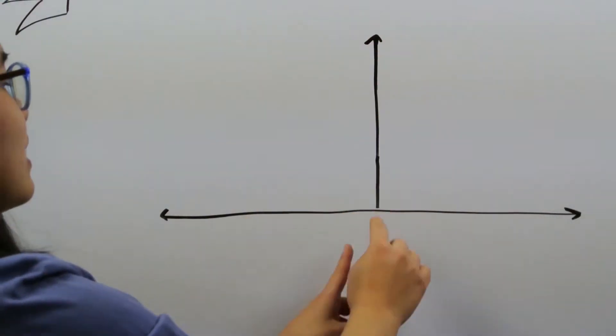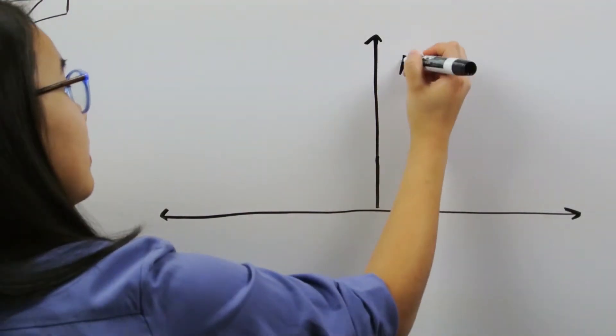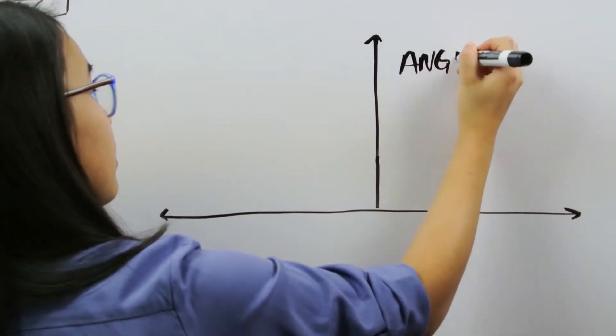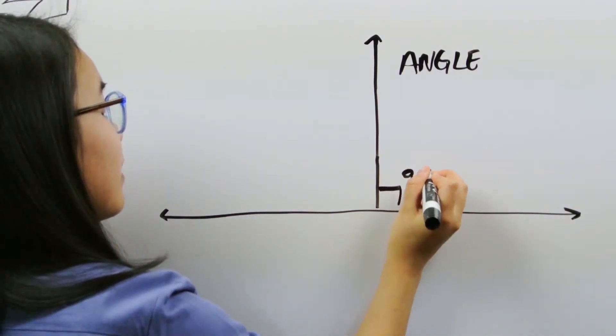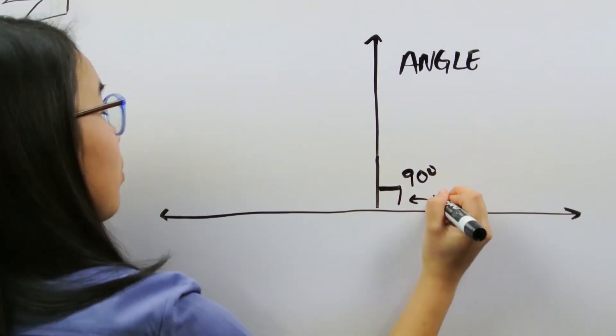When two lines meet, they form an angle. If this angle is 90 degrees, they're perpendicular and this is called a right angle.